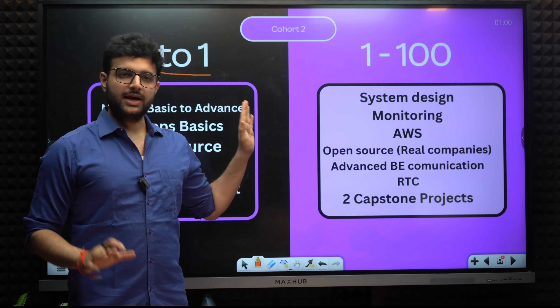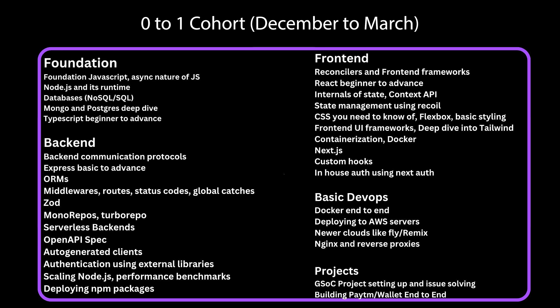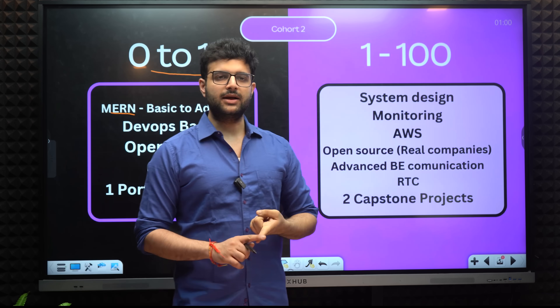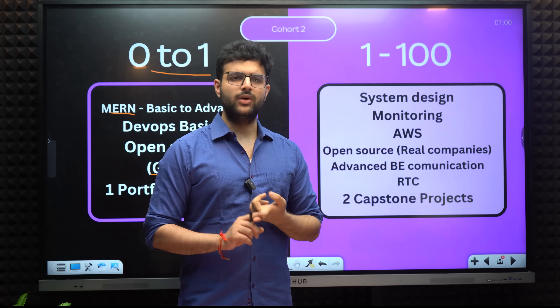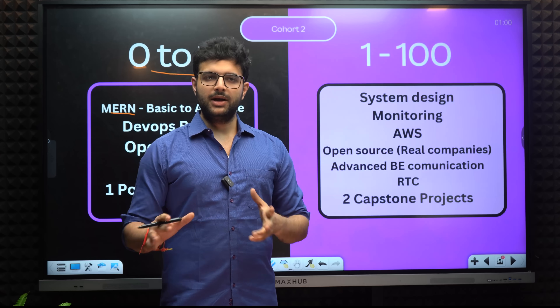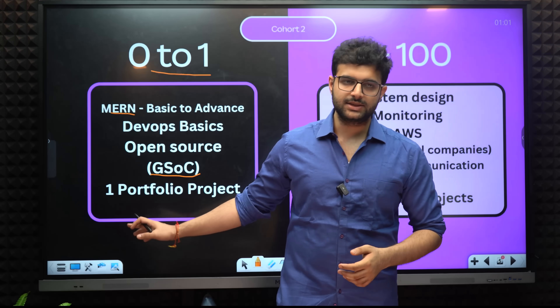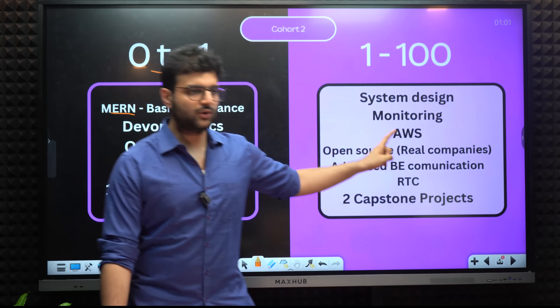If you already know the MERN stack very well, this part is not for you. If you were part of the first cohort, this part is definitely not for you — we covered this and much more. If you already know the MERN stack well, things will feel really slow. The 1 to 100 part is for you if you know the MERN stack, if you can build websites, deploy them on your own, and can understand GSOC projects.